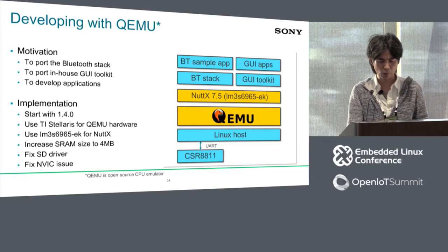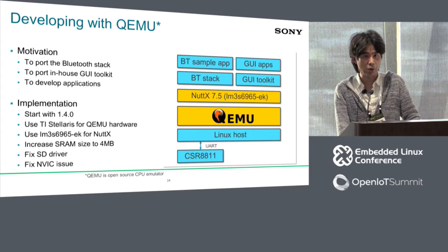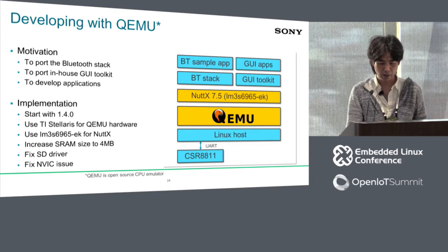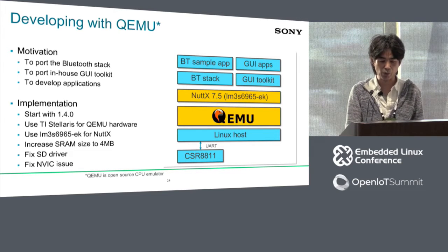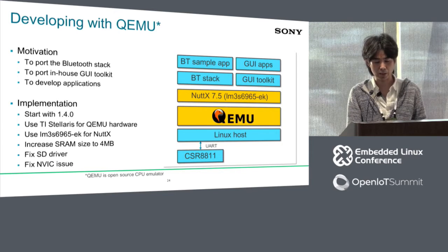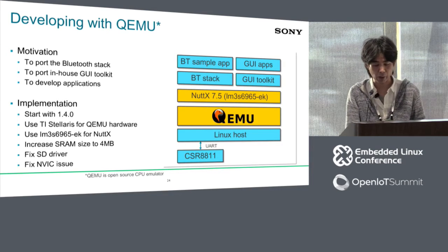So far I've focused on OS porting and enhancement. From here I'll explain about tools and testing. The first tool is QEMU — an open-source CPU emulator which supports many CPU architectures including Cortex-M3. The motivation for using QEMU was to port software such as Bluetooth stack or GUI toolkit. We finished porting the Bluetooth stack on QEMU plus NuttX before we received the FPGA port. The audio spin actually worked on QEMU plus NuttX. To get Bluetooth stack working on QEMU, we had to change SRAM size and fix some bugs — for example SD driver and alignment issues.